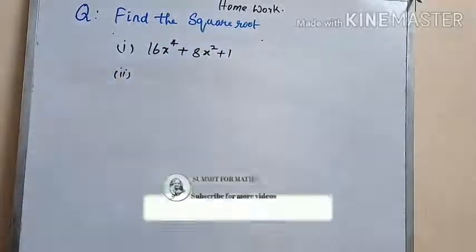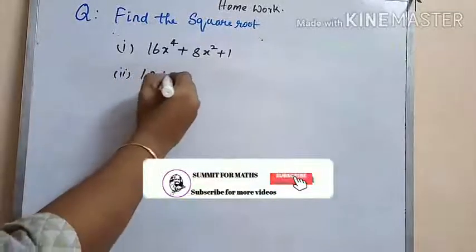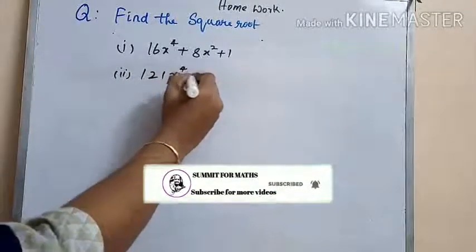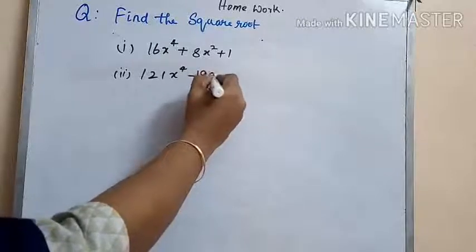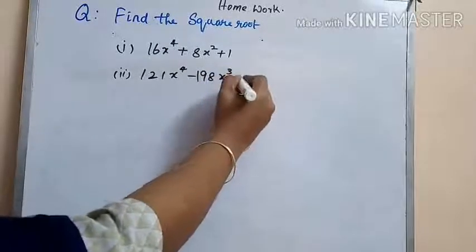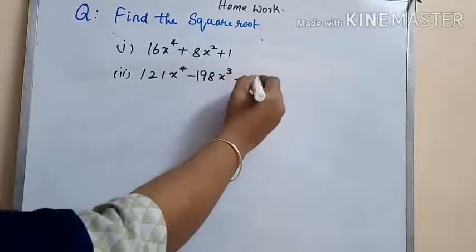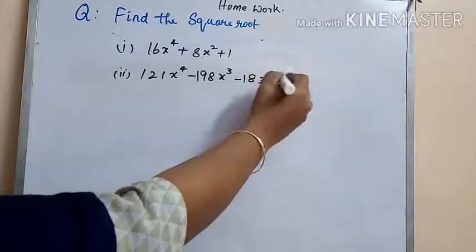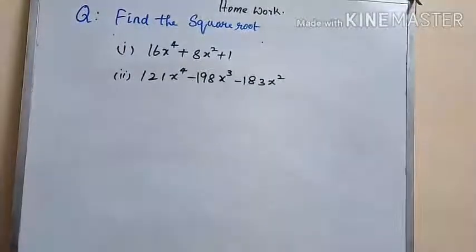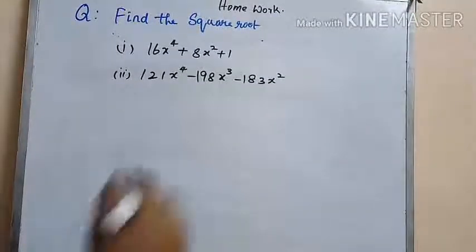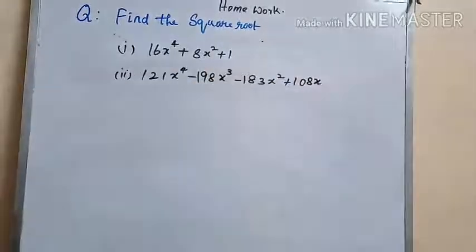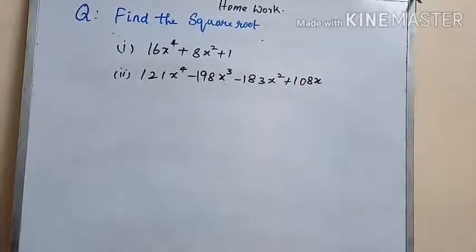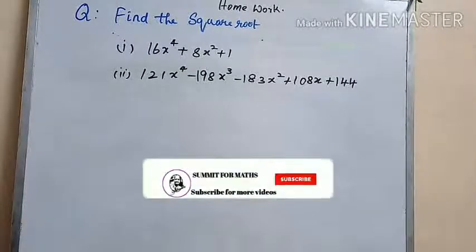The next question is: find the square root of 121x to the power of 4 minus 198x cubed minus 183x squared plus 108x. Complete it and post your answers.